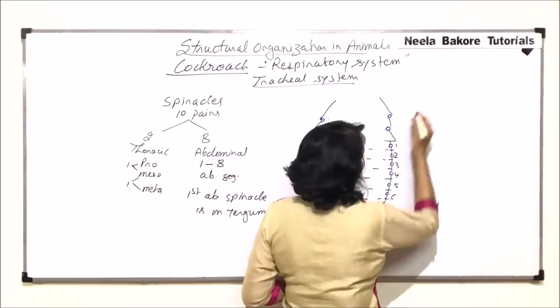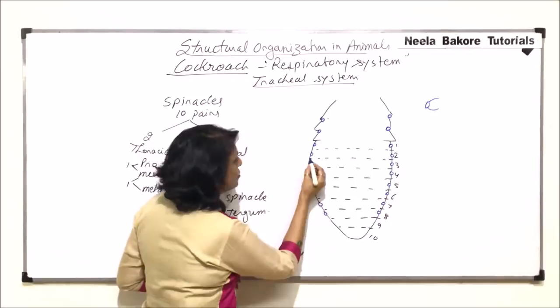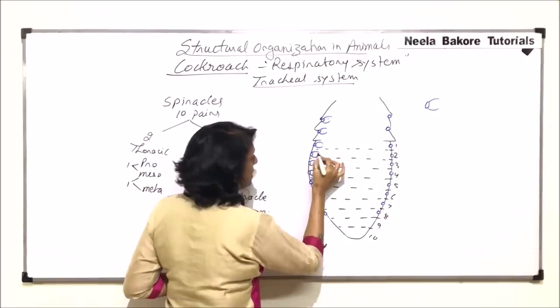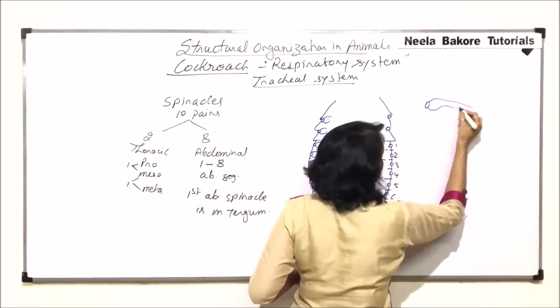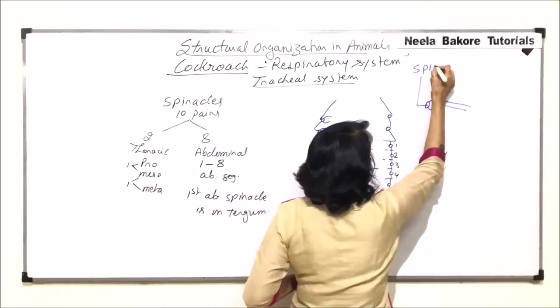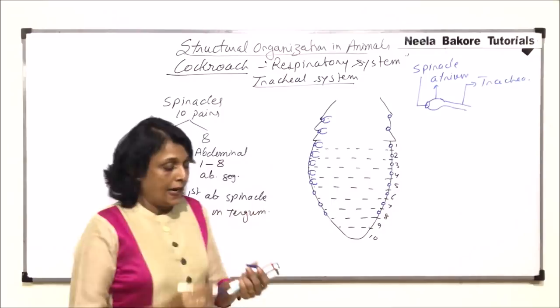We will be drawing this whole thing separately. The spiracle opens into a small sac-like structure — the atria. After the sac-like structure, there is a tube-like structure which is known as the trachea. That is why the system is called the tracheal system. So: the opening is the spiracle, this is the atria, and this is the trachea.